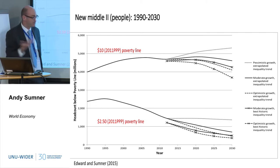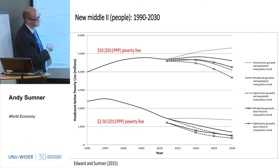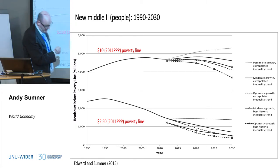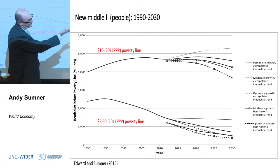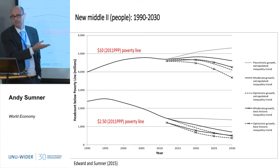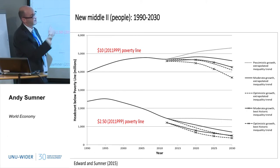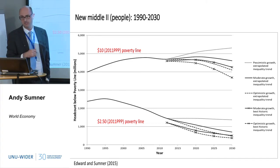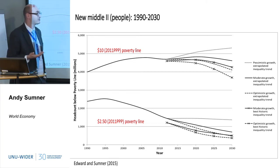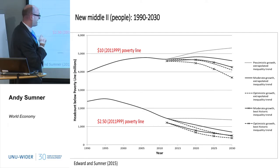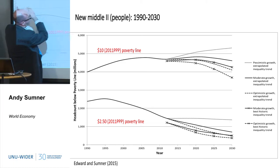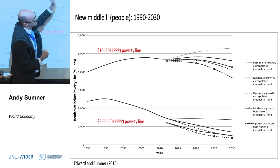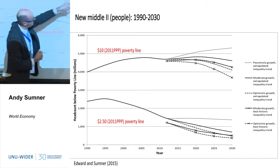The World Bank is about to announce something closer to $1.80 as the update to the poverty lines. It doesn't make a huge difference whether you take optimistic or pessimistic growth, and we also ran trends for inequality — either extrapolating based on historical trends, or assuming a country returns to its historically lowest inequality point, since you can't really expect countries to be more equal than they have ever been historically. So as poverty at the lower lines has fallen and may continue to fall, at higher poverty lines there's not that much change, and you've got this burgeoning group in the middle.